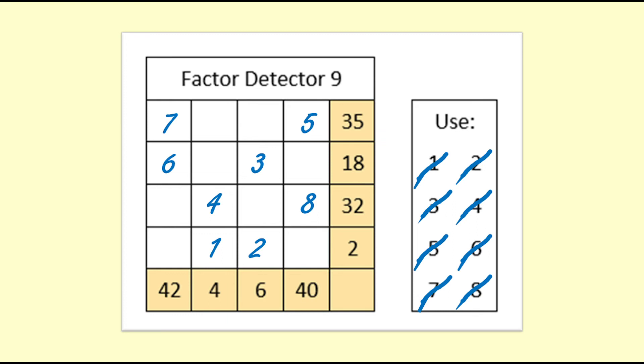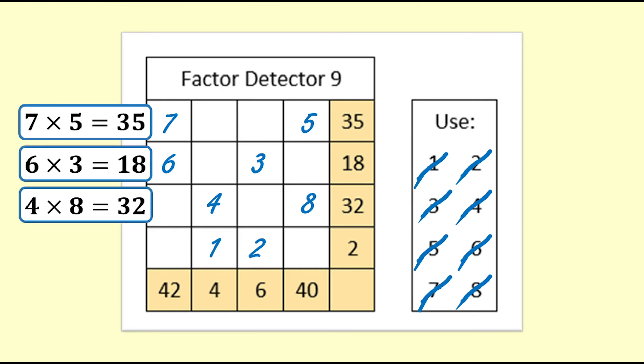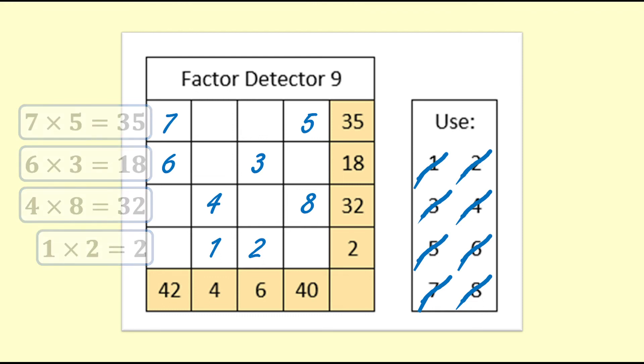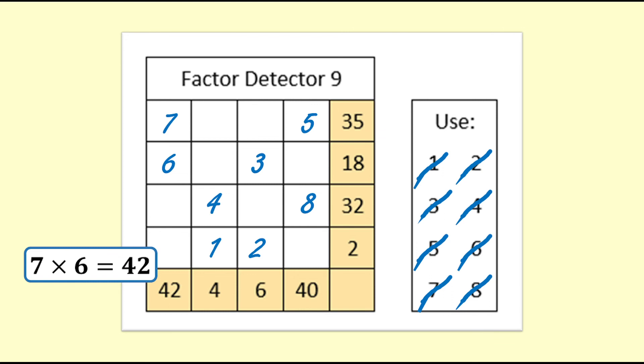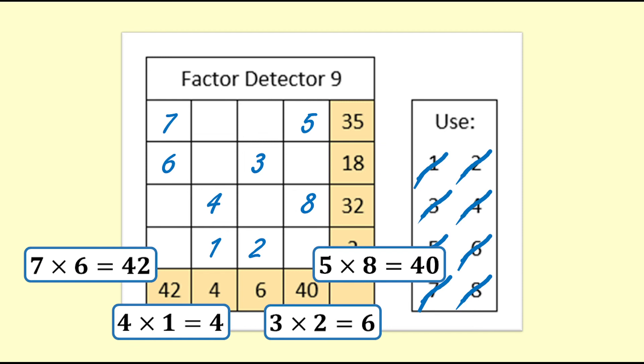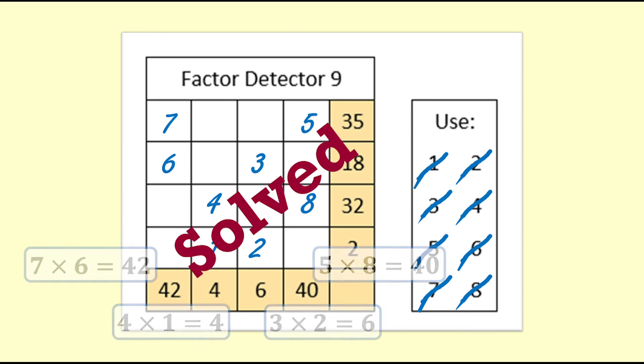Now we check that all the rows and columns multiply to the correct result. 7 times 5 is 35, 6 times 3 equals 18, 4 times 8 equals 32, 1 times 2 equals 2. And now the columns: 7 times 6 equals 42, 4 times 1 equals 4, 3 times 2 equals 6, 5 times 8 equals 40. And thus it is solved.